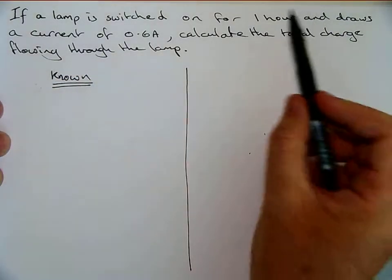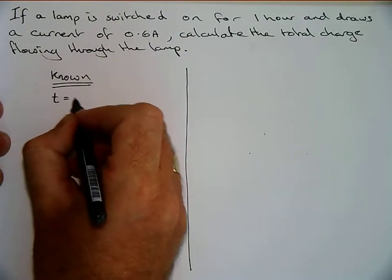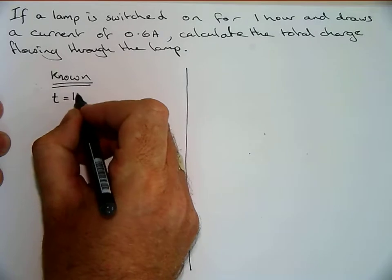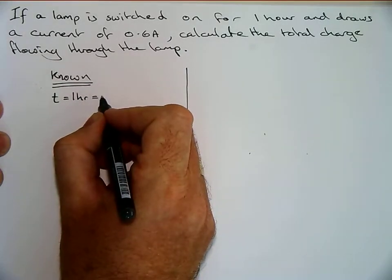And what do we know? Well we know it's switched on for an hour, that's a time, so we get a small letter t, so that's one hour. But we have to convert that into seconds, and so that's 60...